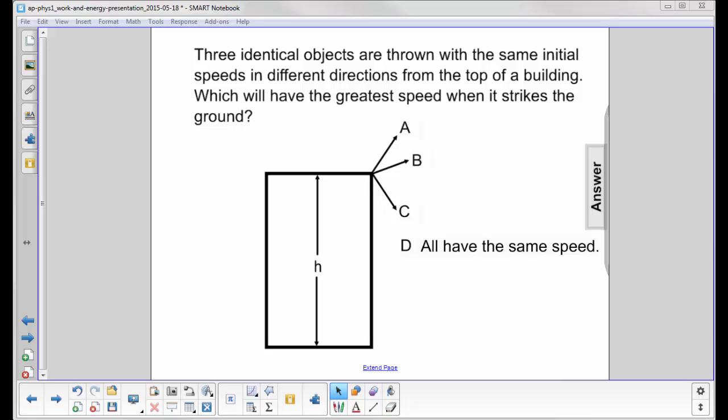Three identical objects are thrown with the same initial speeds in different directions from the top of a building. Which will have the greatest speed when it strikes the ground?